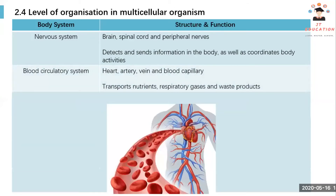Then we have the blood circulatory system, which contains the heart, arteries, veins, and blood capillaries. It helps to transport nutrients, respiratory gases, and waste products.